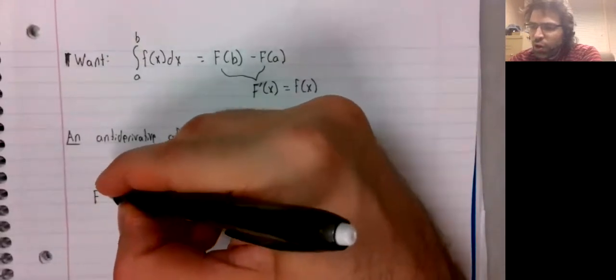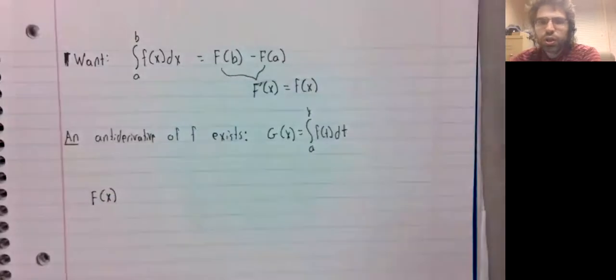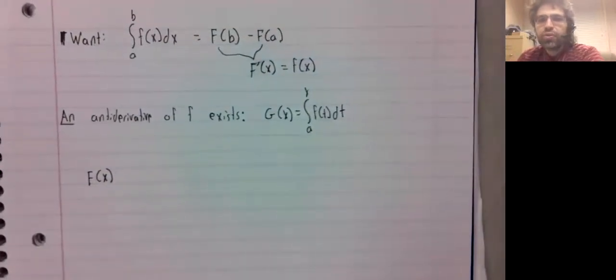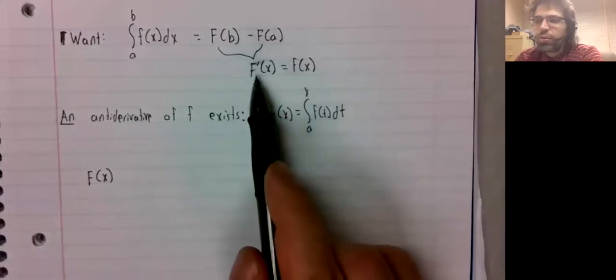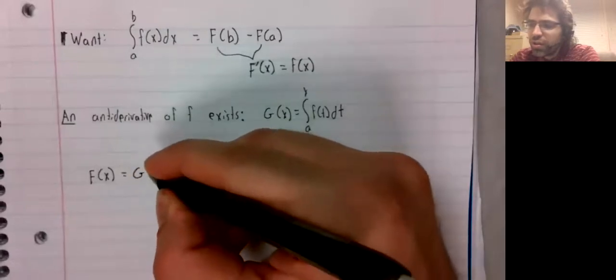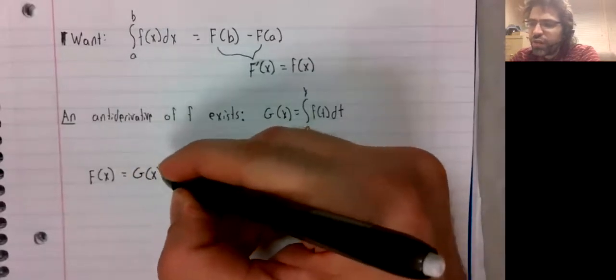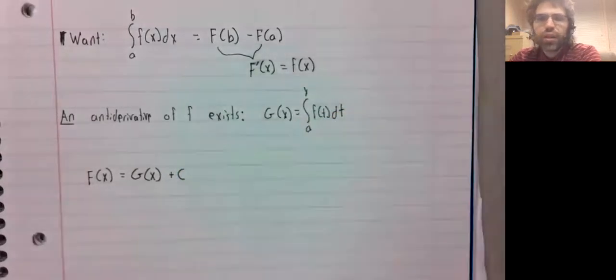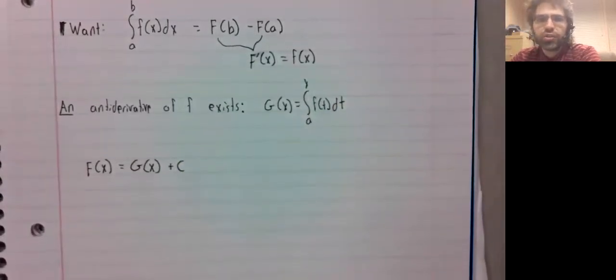And all anti-derivatives look basically the same. Once you've found one anti-derivative, you've found them all. So capital F of x is g of x plus a constant.